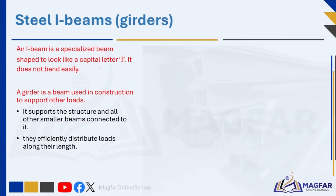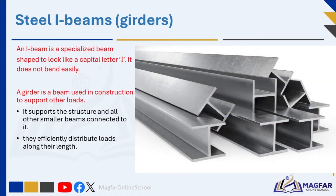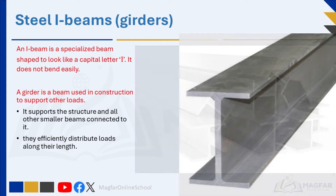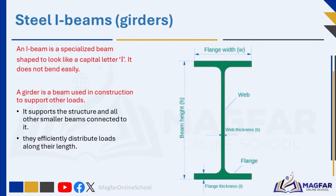An I-beam is a specialized beam shaped to look like a capital letter I. It does not bend easily and is the main horizontal beam of a structure, often supporting other smaller beams. These have a strong I-shaped cross section, making them efficient at resisting bending. The I shape provides strength and support, making beams reliable, and they can be used as girders. A girder is a beam used in construction to support other loads, forming the main horizontal beam in a structure and supporting all other smaller beams connected to it. Beams can be box or Z-shaped and are commonly used in bridges and buildings, efficiently distributing loads along their length.